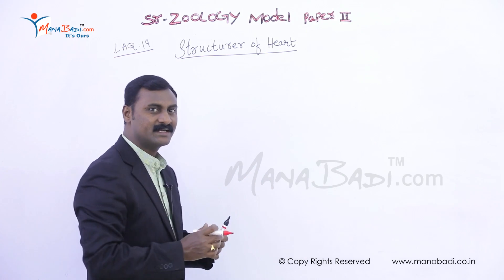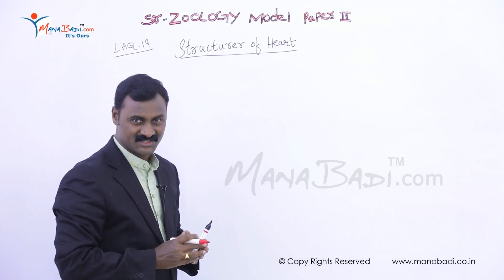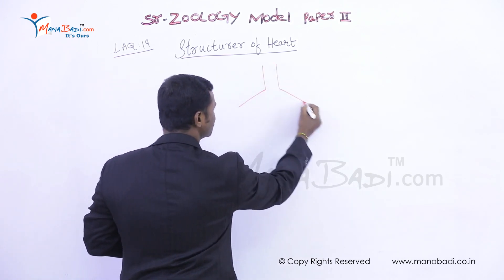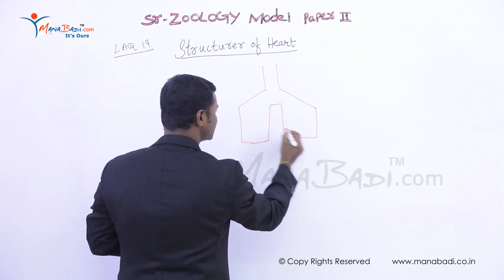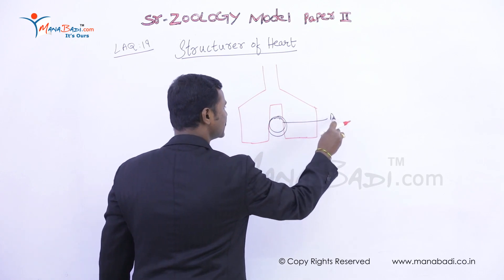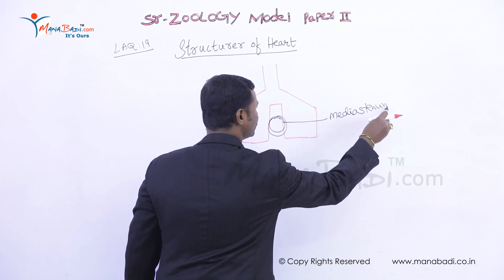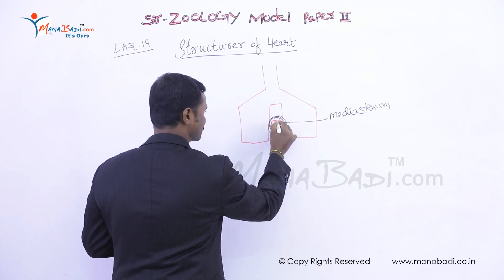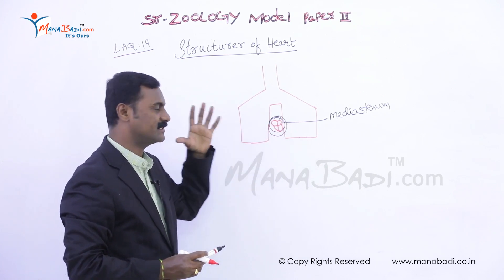Where is the heart located and how does it look externally and internally — that all comes under structure. The lungs are present in the thoracic cavity, and between the lungs there is a space called the mediastinum cavity. In the mediastinum cavity, slightly to the left side, we can see the heart.